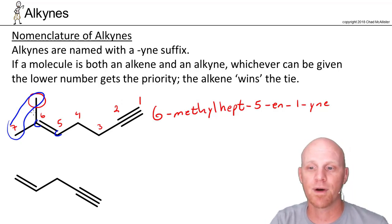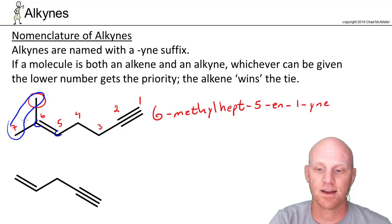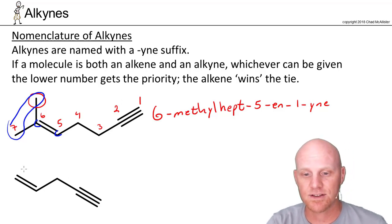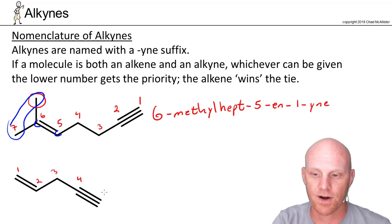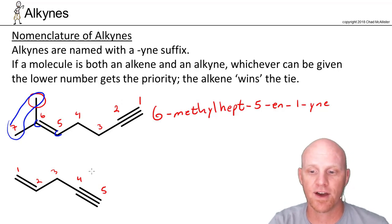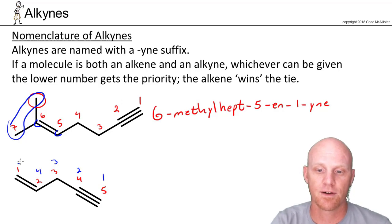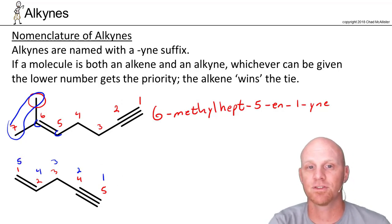If we look at the second example here, in this case we're going to find there's a tie. If I number this left to right, 1, 2, 3, 4, 5, I'd see that my alkyne is at position 1 and my alkene at position 4. If I go the other way around, 1, 2, 3, 4, 5, now my alkyne is at position 1 and my alkene is at position 4. It's an absolute tie number-wise.